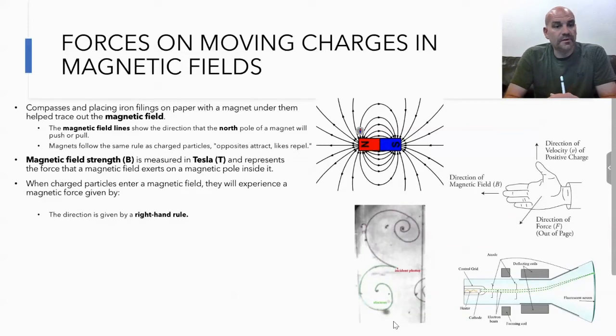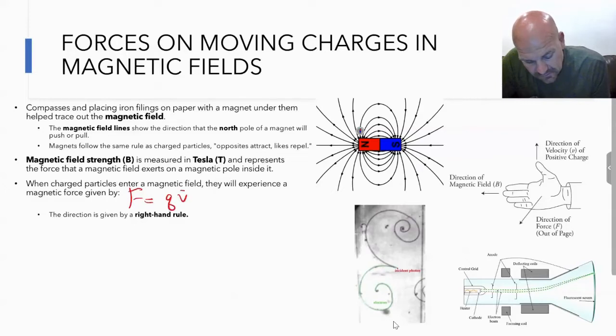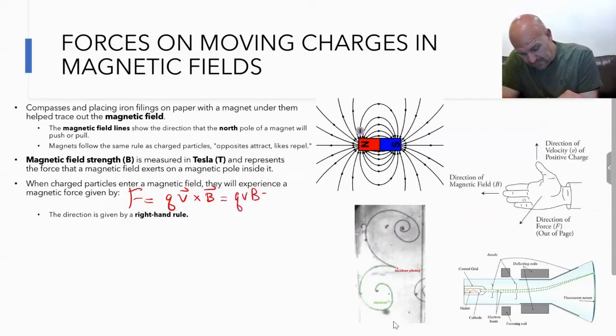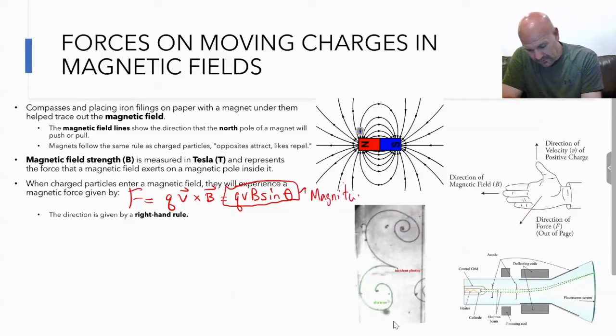When a charged particle enters a magnetic field, they're going to experience a force given by the equation F equals q v cross B. If we want to remove that cross product, we can add in our sine, so qvB sine theta. That's how you would determine the magnitude of the force.